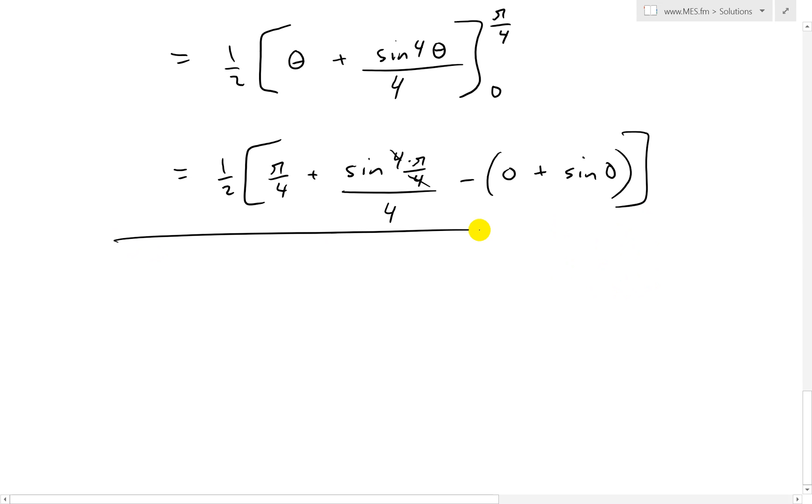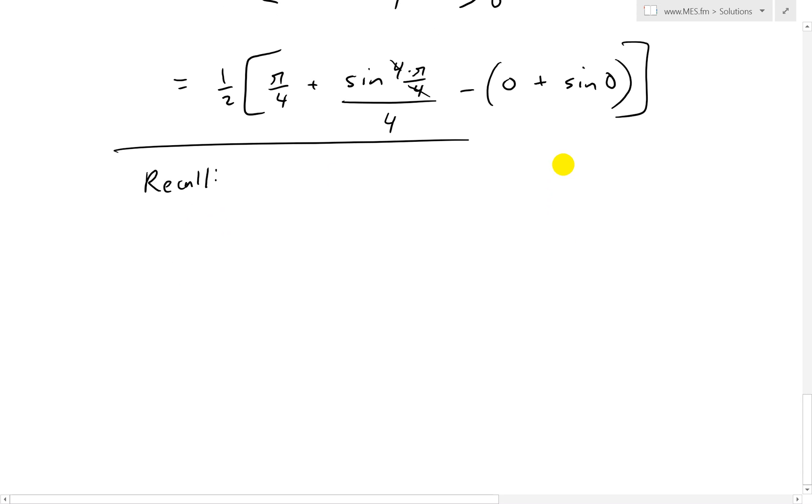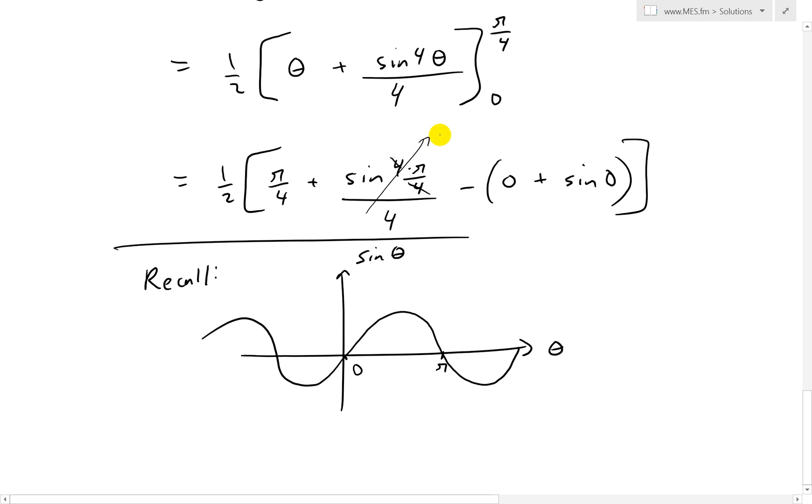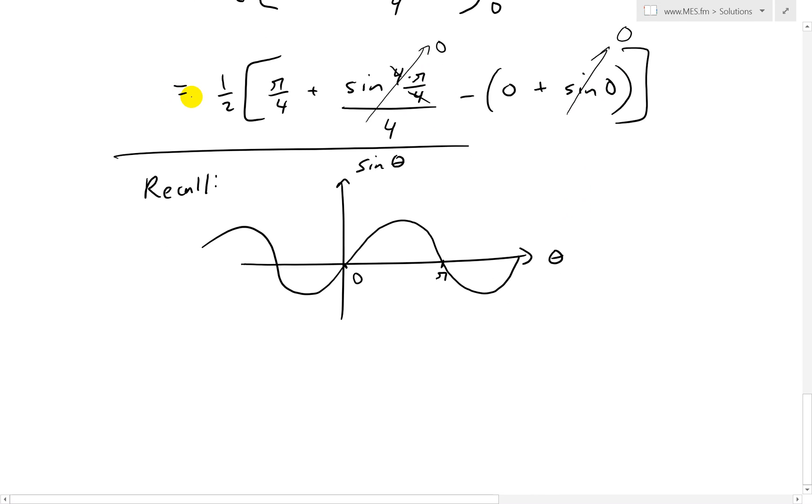So that's what we have. And then we know those values of sine, we could just recall the sine curve, quickly recall it. If we have this is theta, I'll write this y-axis as sine theta. So then this one just looks something like that, and goes up and down. Where at this point here is 0, and this is pi. So that's also 0. So that means sine pi goes to 0. Sine 0 goes to 0.